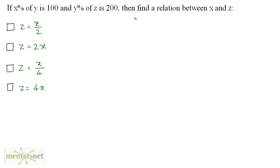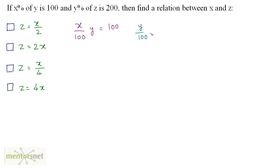Find a relation between X and Z. X percent of Y is 100, so I can write X upon 100 times Y equals 100. And Y percent of Z is 200, so Y upon 100 times Z equals 200.